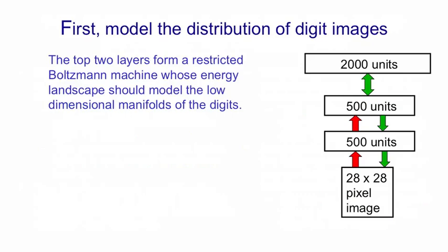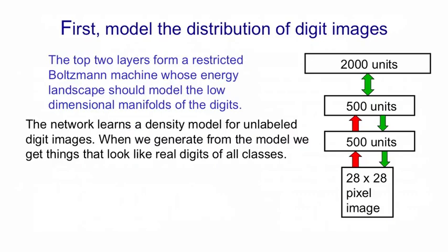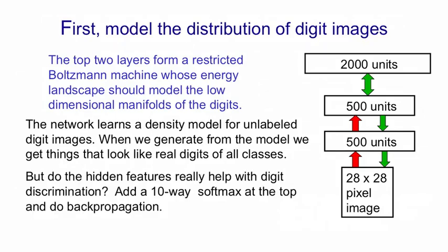Let's apply this to modeling the MNIST digits. We'll learn three hidden layers of features entirely unsupervised. Once we've done that learning, when we generate from the model it will generate things that look like real digits from all different classes, tending to stay in the same ravine before jumping to another. The question is whether the features learned that way are useful for discrimination. All we need to do is add a final 10-way softmax at the top and fine-tune with back propagation, and see if we do better than purely discriminative training.